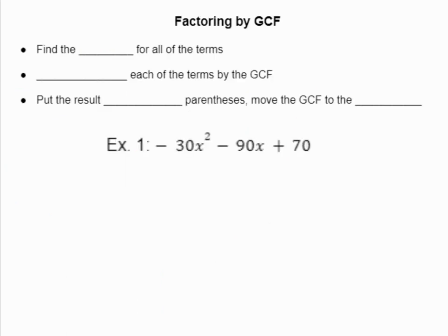Now, if I want to factor by GCF, factoring means to take that GCF and pull it out of our polynomial. So there's three steps. The first is to find the GCF of all of your terms. Then you're going to divide each of your terms by your GCF. Then you're going to put your result inside of some parentheses and move your GCF to the outside. We're not actually getting rid of our GCF, we're just pulling it out.